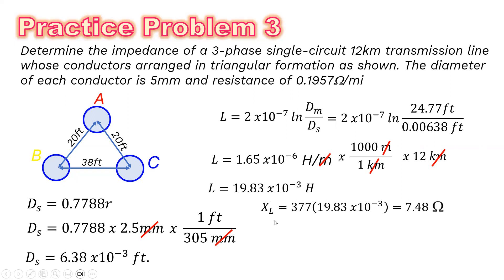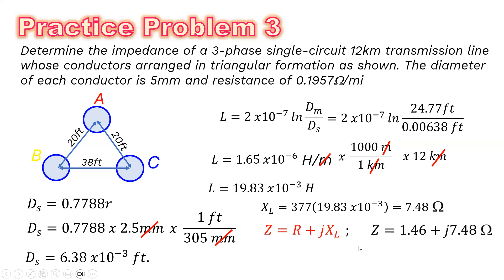The inductive reactance X_L = ω × L = 377 × 19.83 × 10⁻³ = 7.48 ohms. Therefore, the impedance Z = 1.46 + j7.48 ohms in rectangular form, which converts to 7.62 ∠ 78.96° ohms in polar form.